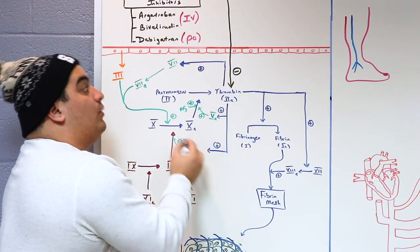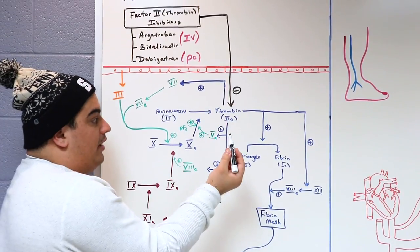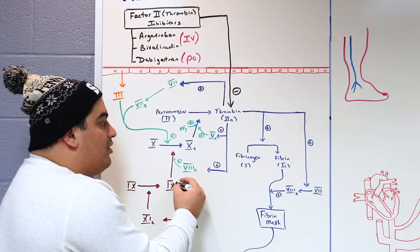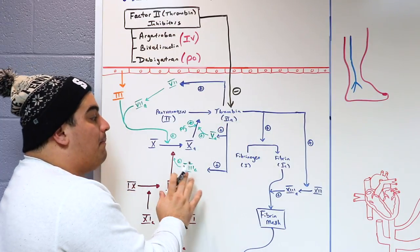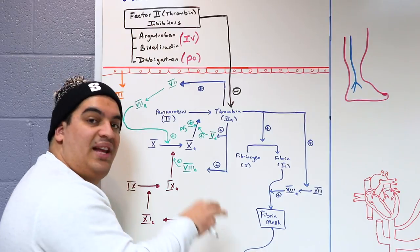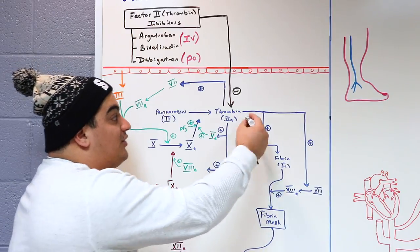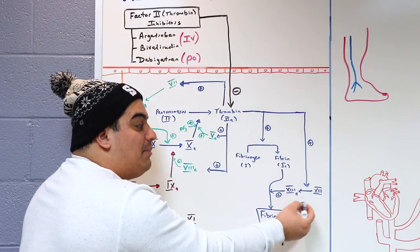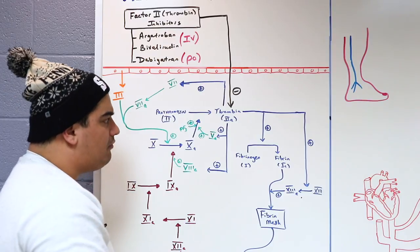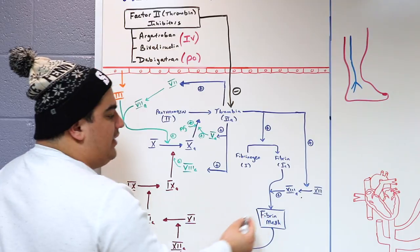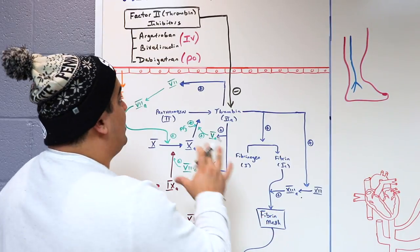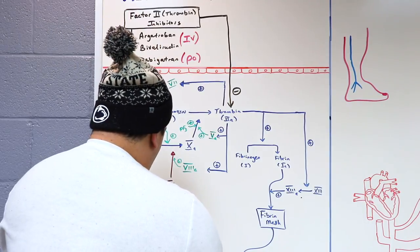This drug directly inhibits thrombin. Thrombin activates factor 5 (which amplifies thrombin production) and factor 8 (involved in activating factor 10). Thrombin also converts fibrinogen into fibrin, forming the fibrin mesh that stabilizes secondary hemostasis, and activates factor 13 (fibrin stabilizing factor), which cross-links the fibrin mesh. Inhibiting thrombin therefore reduces many clot-forming processes.